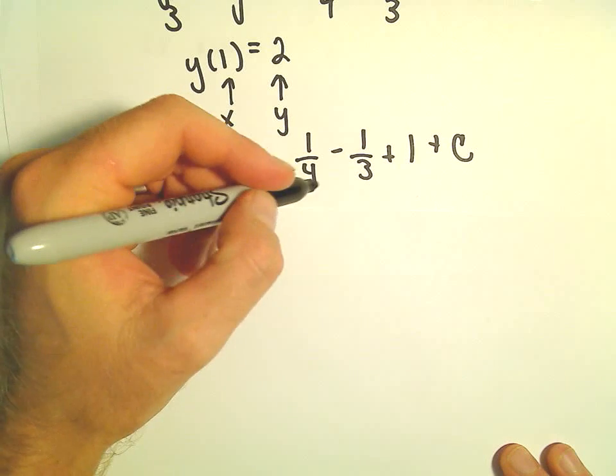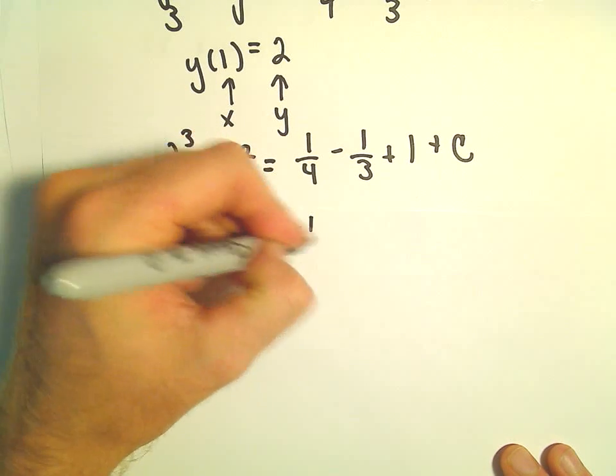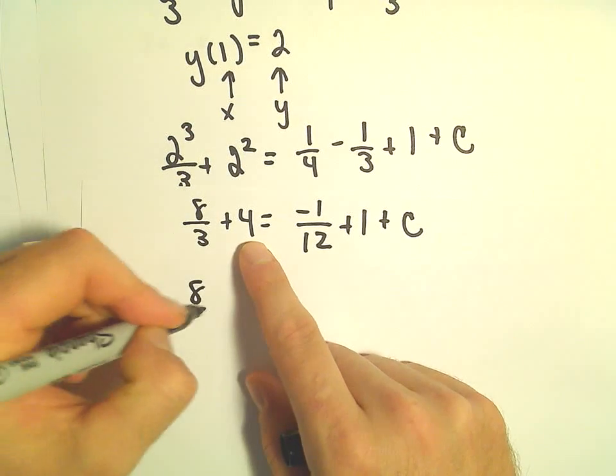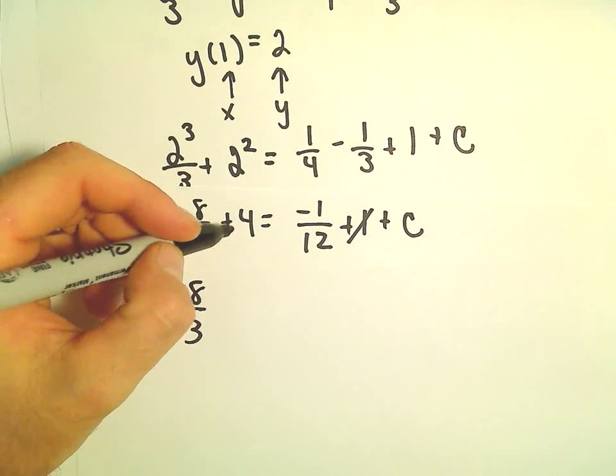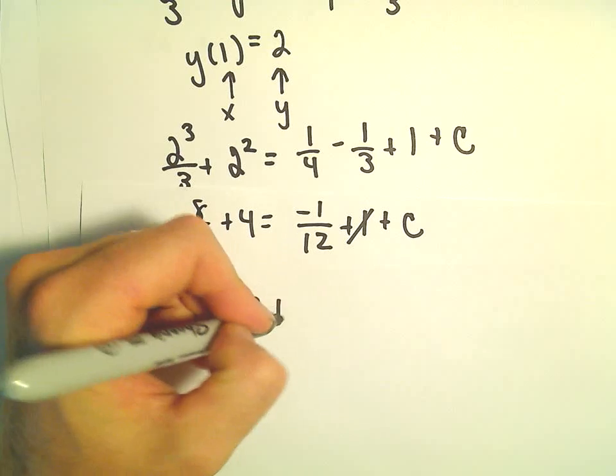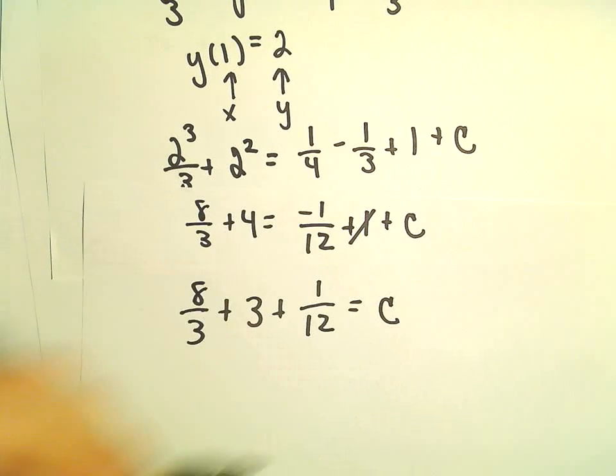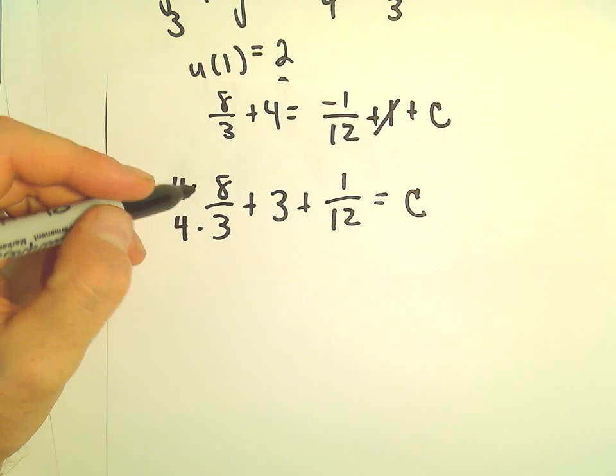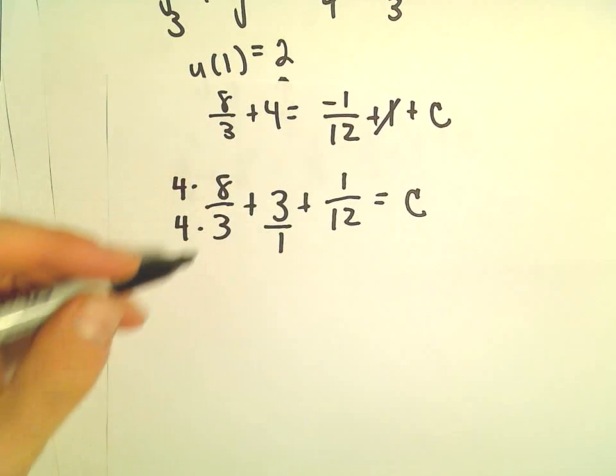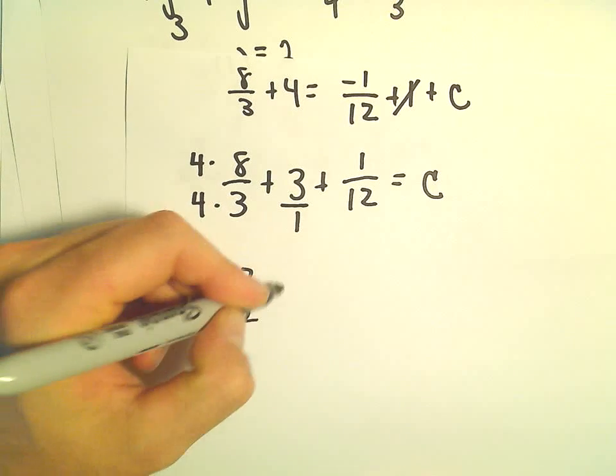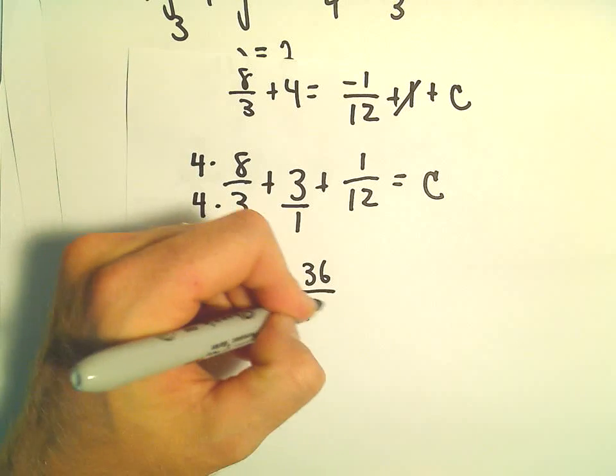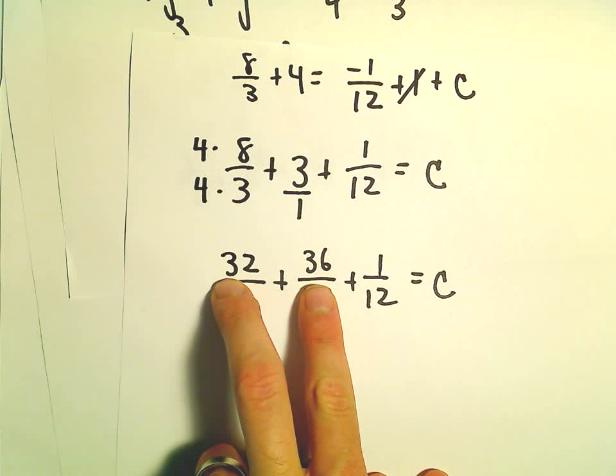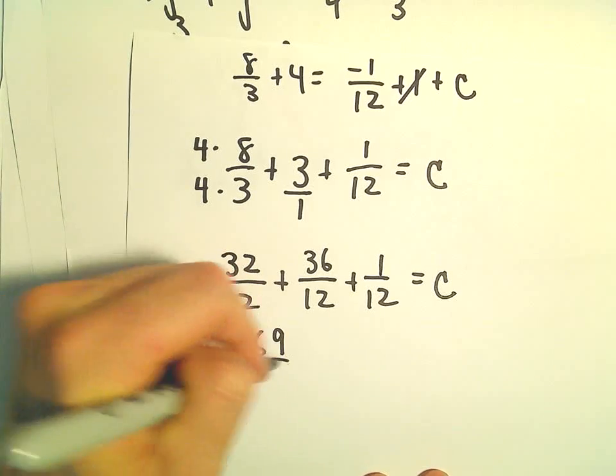So, this is 8/3 plus 4. Let's see. I guess we have 1/4 minus 1/3. That's going to be 3/12 minus 4/12. That's negative 1/12 plus 1 plus c. Let's see. If we subtract the 1, if we subtract 1 from both sides, our plus 4 will turn into a plus 3. We can add the 1/12 over. That will give us our value for c. Let's see. I guess we can multiply top and bottom of the first fraction by 4. Top and bottom of our second fraction by 12. That would give us 32/12. 3 times 12 will be 36/12 plus 1/12. Let's see. 32 and 36, that's going to be 68 plus 1. That's going to be 69/12.